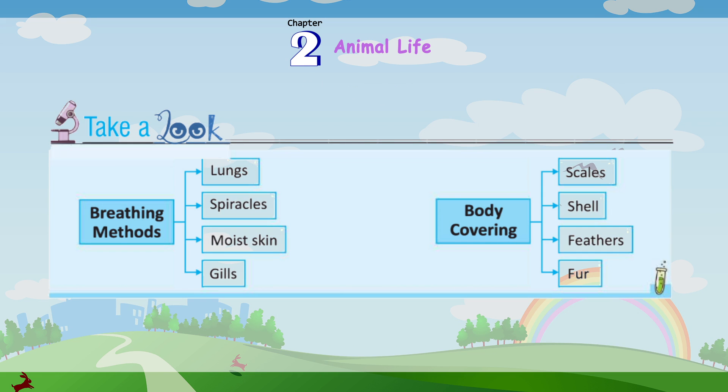Summary — Breathing methods include: Lungs, Spiracles, Moist skin, and Gills. Body coverings include: Scales, Shell, Feathers, and Fur.